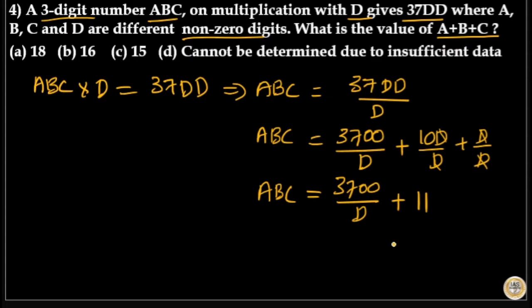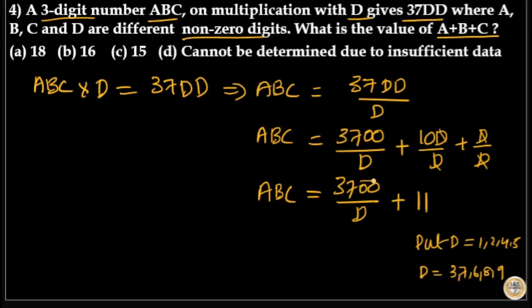Now put the value of D as 1, 2, 4, or 5. You cannot put D as 3, 7, 6, 8, or 9, because 3700 has two zeros, and dividing 3700 by 3, 7, 6, 8, or 9 gives decimal points. Since ABC is a three-digit whole number, D cannot be 3, 7, 6, 8, or 9.